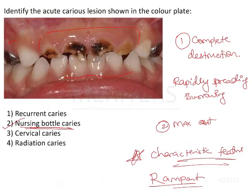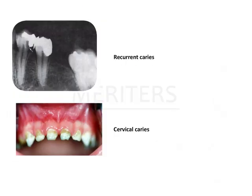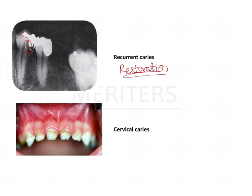Now, how can we differentiate this from the other options? Recurrent caries are caries seen under a restoration. For recurrent caries to be diagnosed, a restoration must be present — which was not the case in the given image. It is usually seen on a radiograph as a radiolucency below an existing restoration.